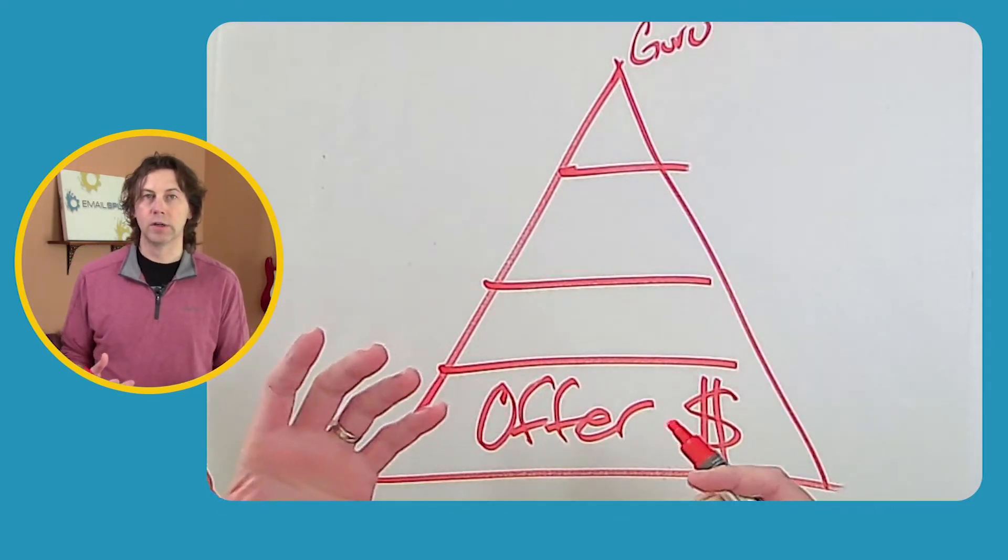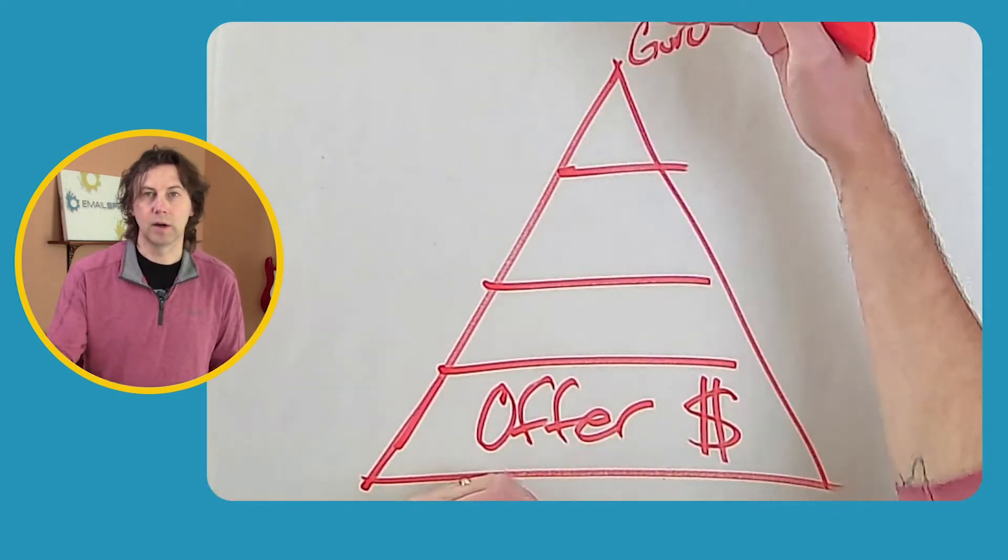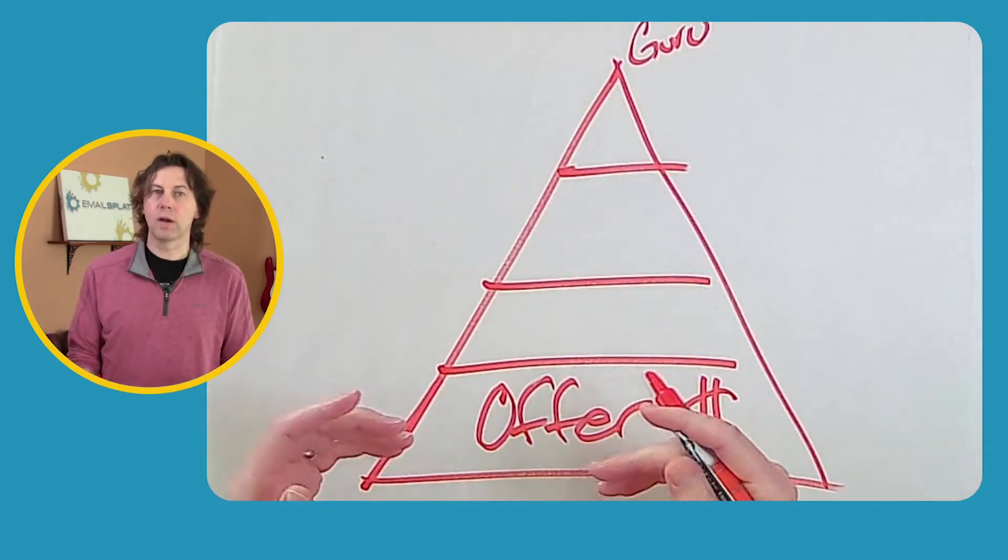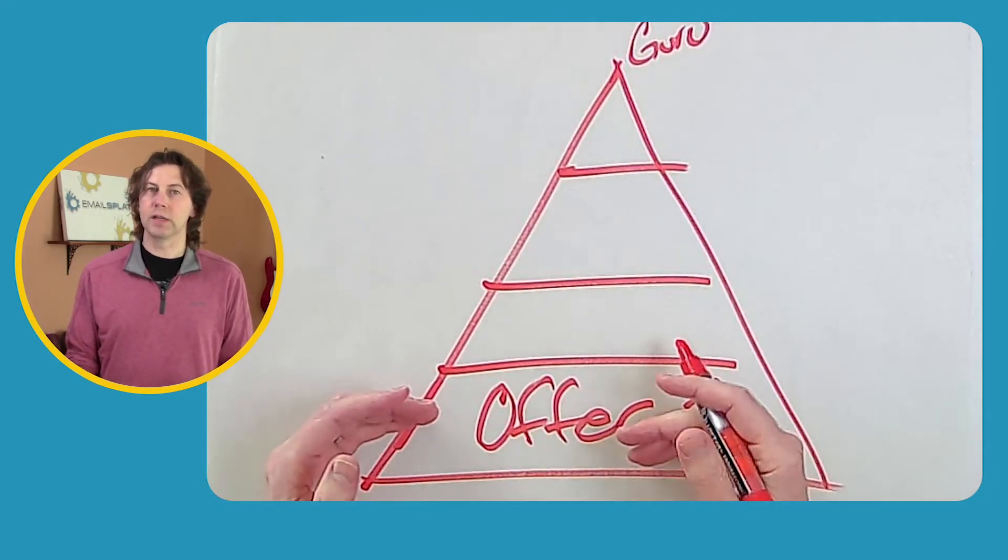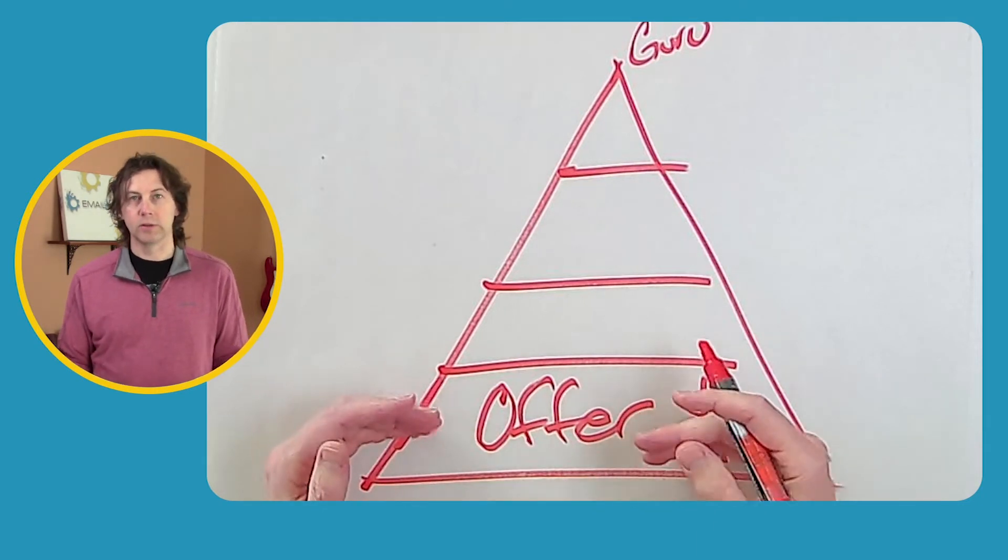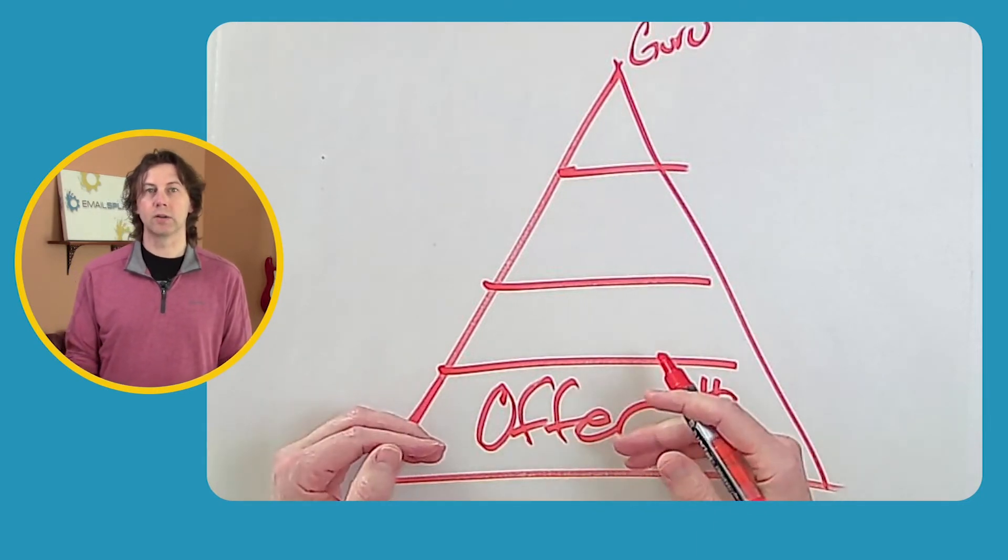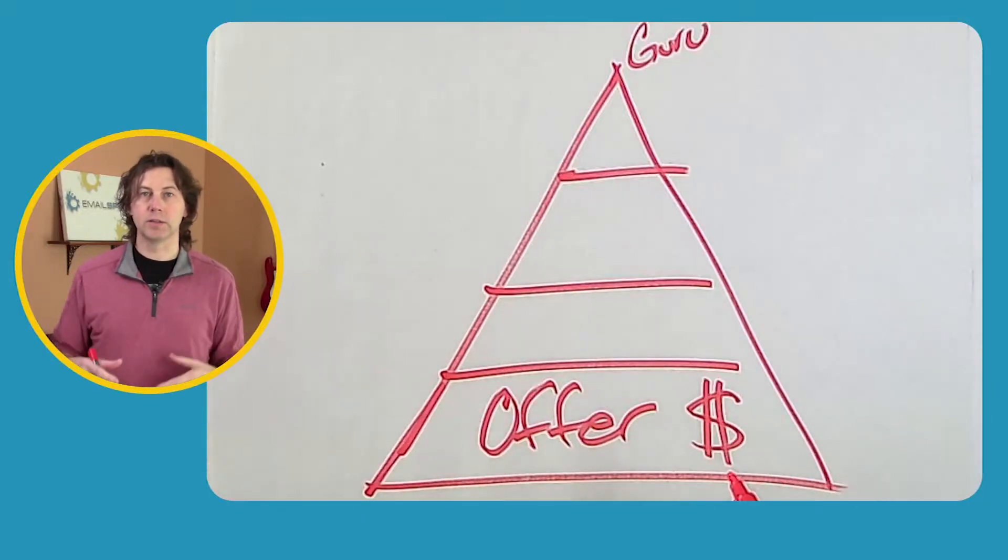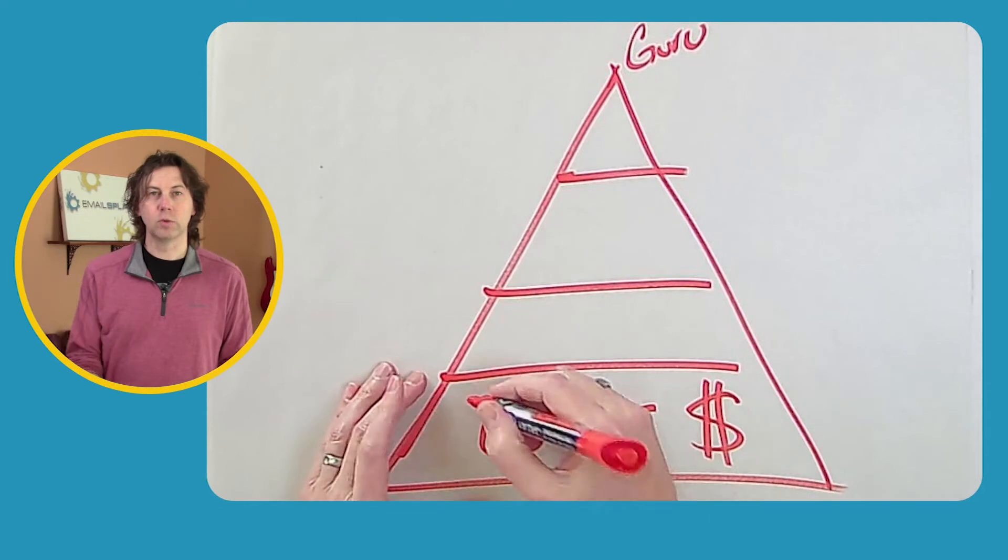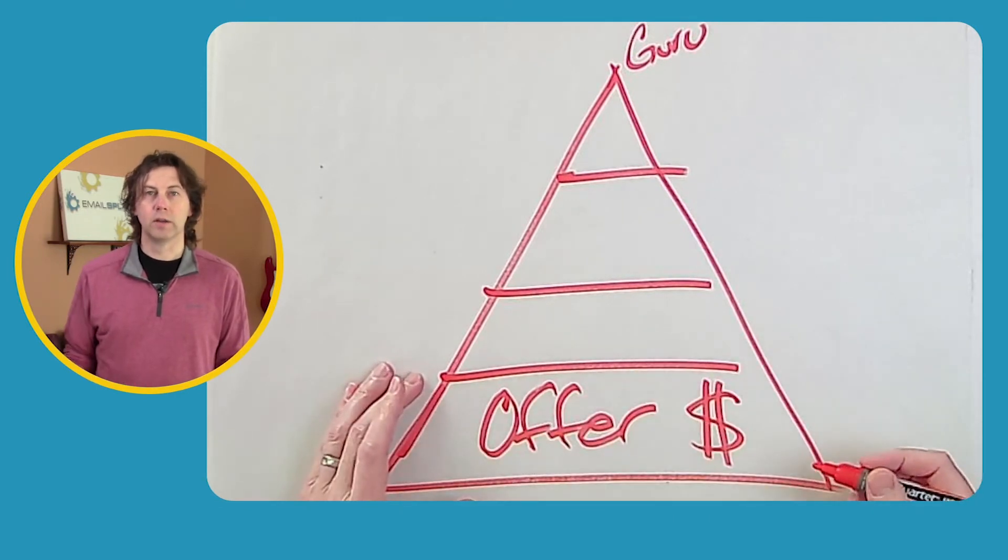We don't need 15 segments when we don't even have one offer that converts. We don't need to automate something when we don't even know what we're automating. So we need to start right down here at the bottom of the pyramid with a really solid offer. And until we find that solid offer, there's no sense moving up. That's finding a product or service that resonates with your market in a language that resonates so they look at it and go, hey, I need that. And you do that by trying things - different products, different services, framing it different ways.